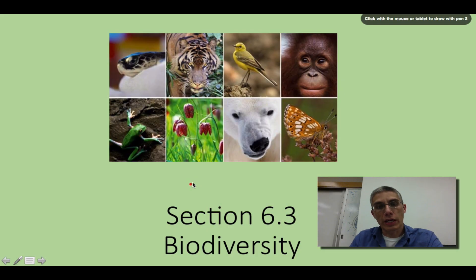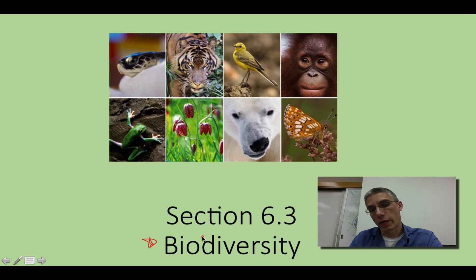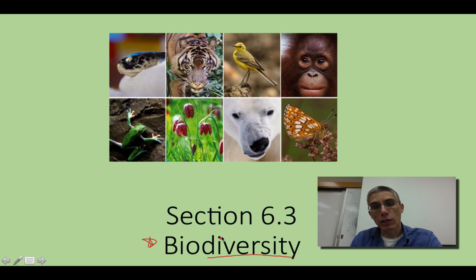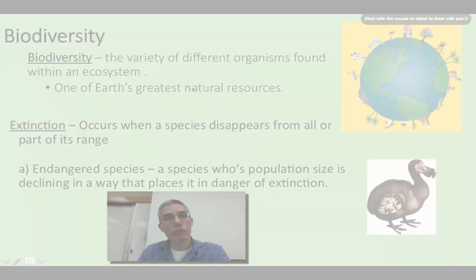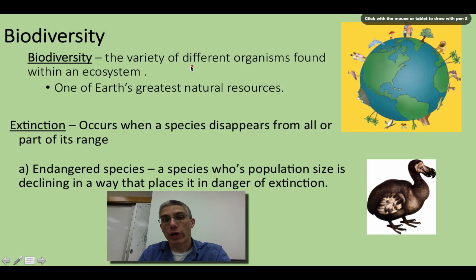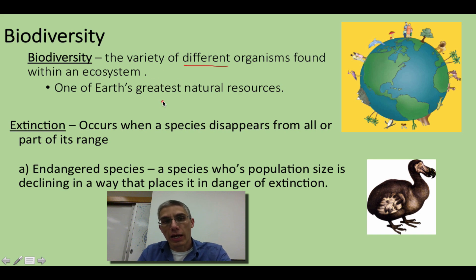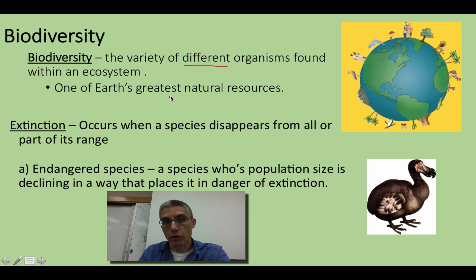Final screencast for Chapter 6, and in Section 6.3, we are going to focus on the idea of biodiversity. The idea of diversity simply means to look at the different types of something, and in this case, we're going to be looking at the different types of living things that you would find on this planet. The book definition for biodiversity is the variety of different organisms found within a defined ecosystem, and this variety could include animals, plants, bacteria, fungus, or any other type of living organism found on Earth.